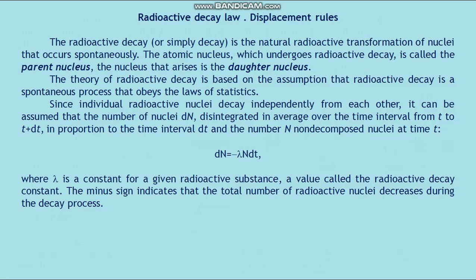is in proportion to the time interval dt and the number N of non-decomposed nuclei at time t: dN = -λNdt, where λ is a constant for a given radioactive substance, a value called the radioactive decay constant. The minus sign indicates that the total number of radioactive nuclei decreases during the decay process.